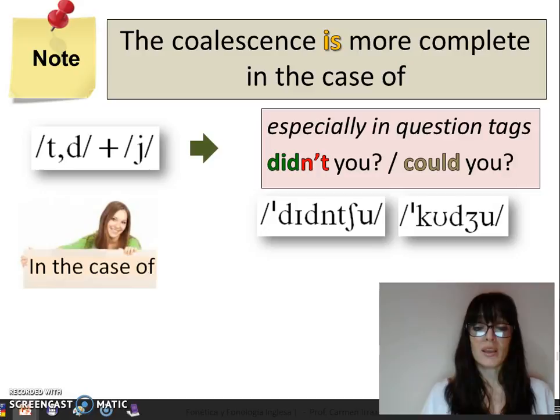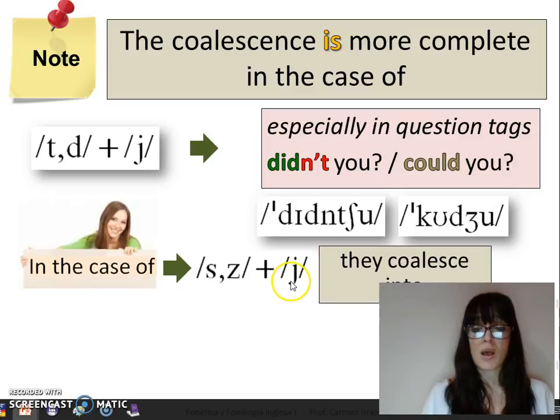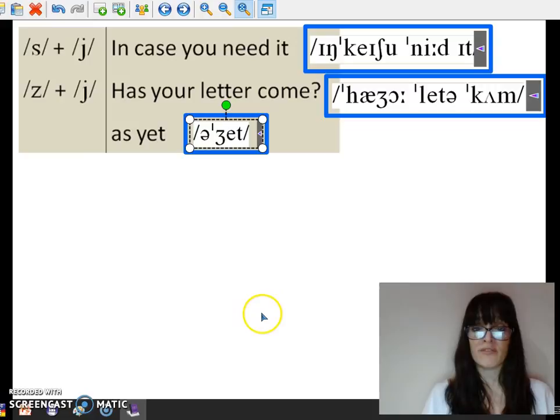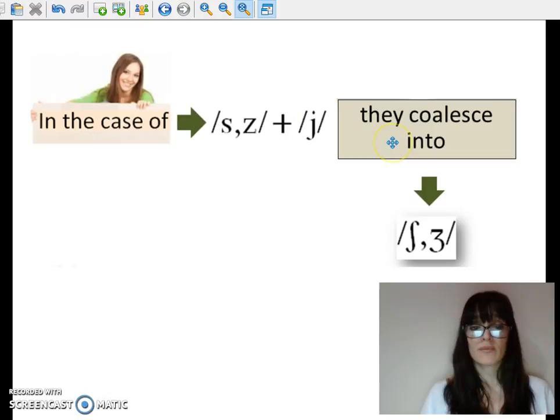In the case of the alveolar fricative sounds plus the palatal semivowel, we have to remember they usually coalesce into palatal alveolar fricative sounds. Another important thing to remember is that the voiceless sound will change into a voiceless one, and the voiced alveolar fricative will change into a voiced palatal alveolar fricative.